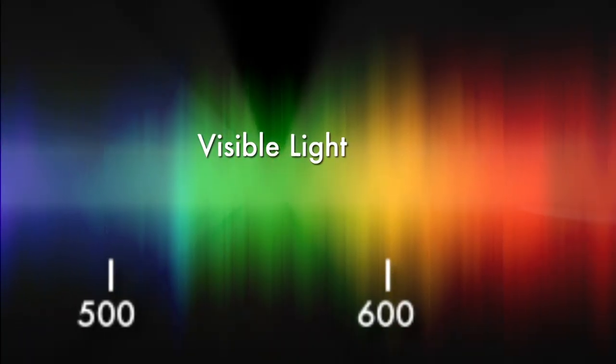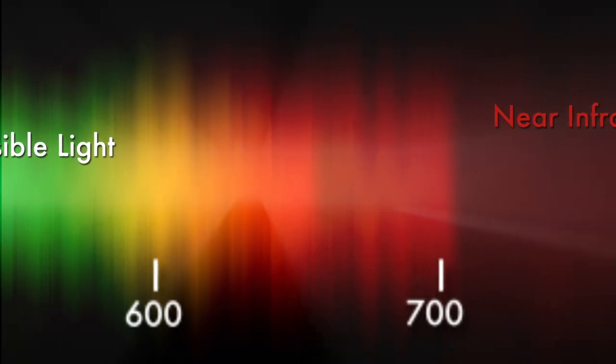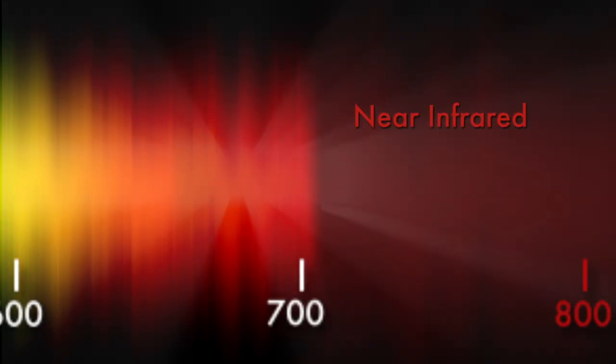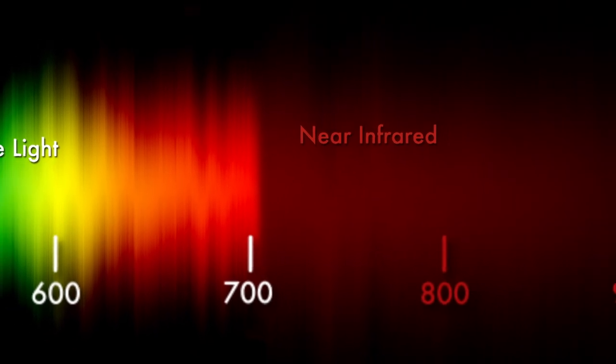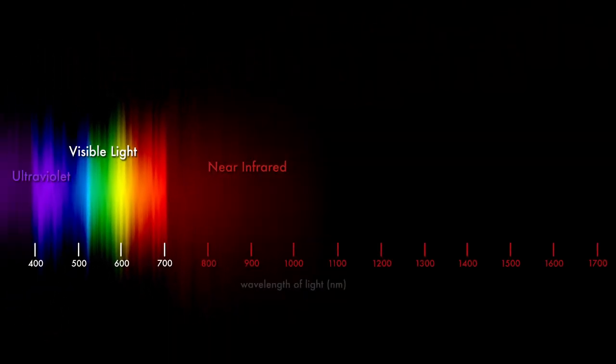Project 1640 is called that because we observe wavelengths that are just redward of what a human eye can detect in what we call the near-infrared. And the wavelength of light at which the project can see the faintest planets is actually 1,640 nanometers.